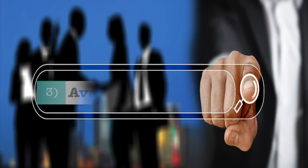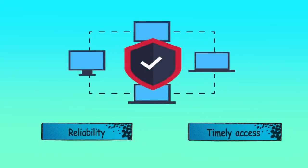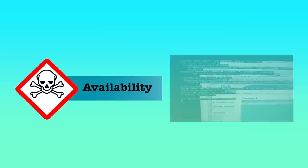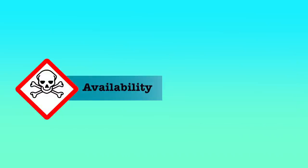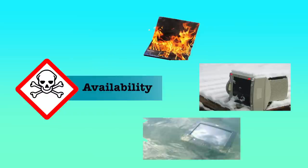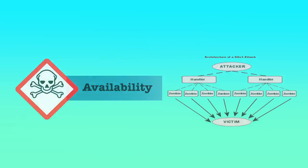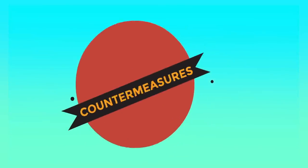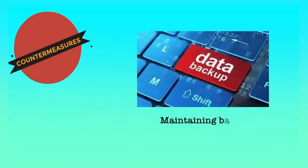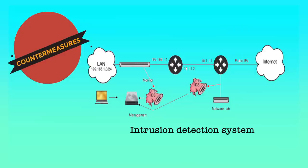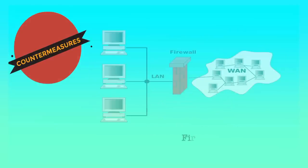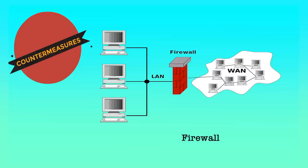The third security principle is availability. Availability ensures reliability and timely access to data and resources to authorized individuals. Threat sources include device or software failure, environmental issues such as heat, cold, humidity, static electricity and contamination, which can also affect system availability, and denial of service attacks. Countermeasures include maintaining backups to replace failed systems, intrusion detection systems to monitor network traffic and host system activities, and use of certain firewall and router configurations.